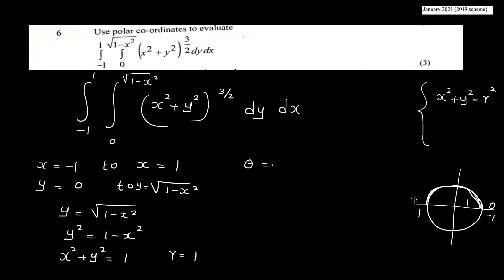So the theta range is 0 to pi, and the r range is 0 to 1.